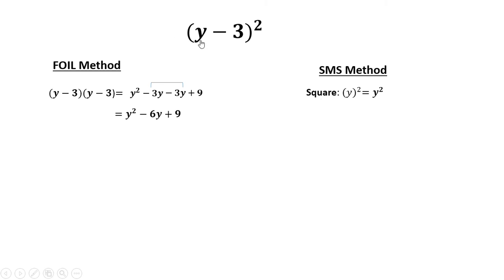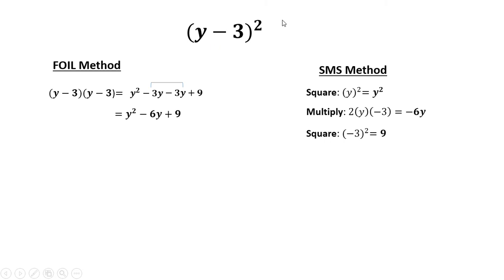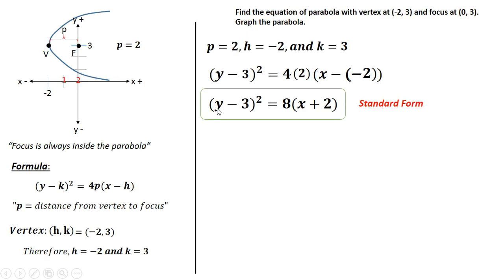For the SMS method: square of the first term is y², then multiply the whole binomial — 2 times y times negative 3 gives negative 6y — and the square of the second term, negative 3 squared, is 9. So y² minus 6y plus 9. Both methods confirm (y - 3)² = y² - 6y + 9.